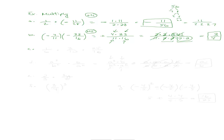Try this one on your own: one-sixth times three-tenths times twenty-five over sixteen. Even with three fractions it's not really different — just multiply two of them first, then multiply your result by the third one.